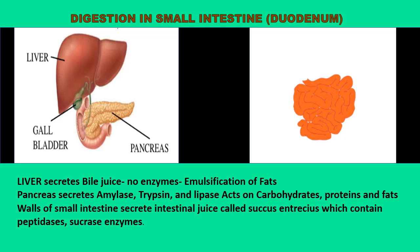Pancreatic juice secreted from the pancreas contains enzymes like amylase, trypsin and lipase. These three enzymes act on carbohydrates, proteins and fat respectively. Amylase converts carbohydrates into maltose sugars, trypsin converts proteins into peptones, and lipase converts fats into fatty acids and glycerol.